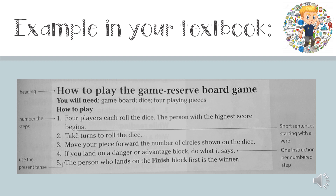Look at the example in your textbook. First you will find the heading — this is almost like the name or the title of the board game. Next is the 'You Will Need' part. This is everything you will need to be able to play the game. In this case: a game board, dice, and four playing pieces.